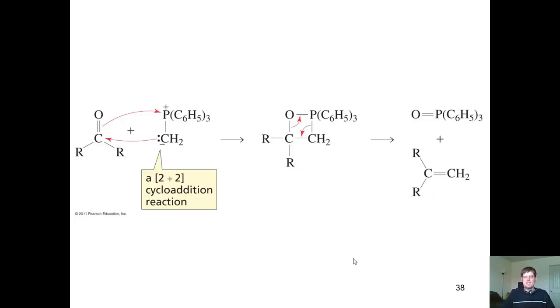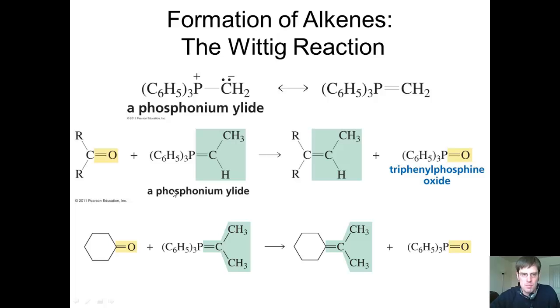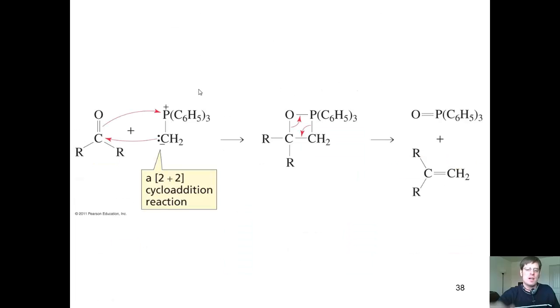So what is the mechanism of the Wittig reaction? Well, I'm going to show you here. What ends up occurring is if you draw this phosphorus-carbon double bond, you'll notice that it actually can be shown as two different resonance structures. If I have the electrons go onto the carbon, I can have a carbanion and a phosphorus cation. So that phosphorus cation is a true resonance structure for this phosphorus-carbon double bond.